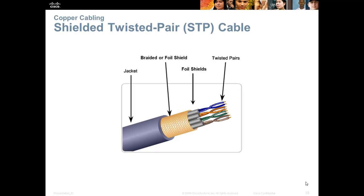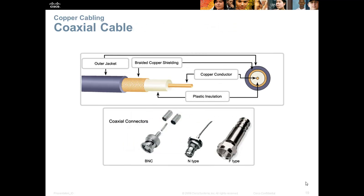A diagram of shielded twisted pair shows the jacket, then a braided or foiled shield. Foil shields can also be placed between each individual twisted pair, though this is not required. The same color coding applies as with UTP. With coaxial cable, we have an outer jacket, braided copper shielding, plastic insulation, and a single copper conductor — no twisted pairs. Common coaxial connectors include the BNC (British Naval Connector), the N-type, and most commonly the F-type, familiar from television sets.